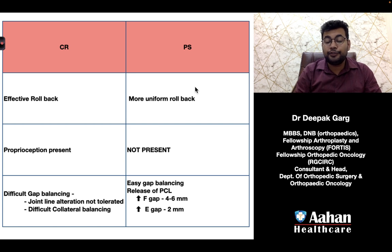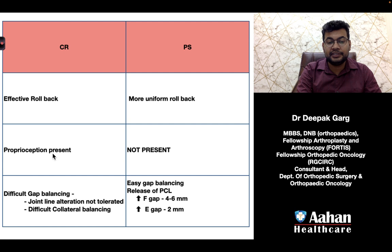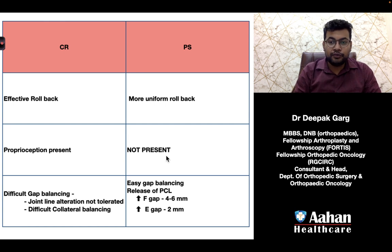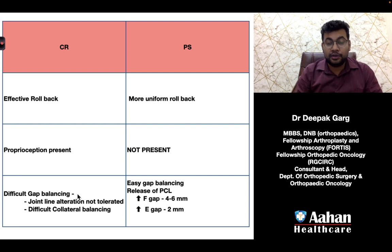In PS, there is a more uniform rollback, meaning both the lateral and medial sides move almost the same. In CR, proprioception is preserved because the PCL is not cut — this is a very big difference — whereas in PS there is no proprioception. However, gap balancing is more difficult in CR, which is why only an experienced surgeon should perform a CR knee. Joint line alteration is not well tolerated with the intact PCL, making it very difficult to balance the collateral ligaments.